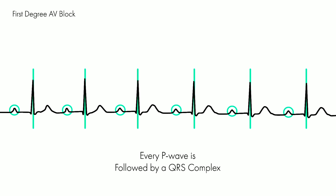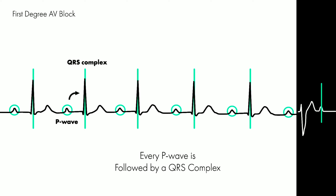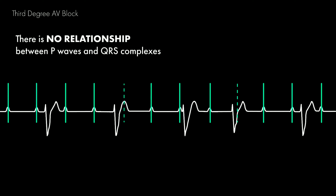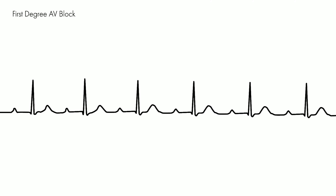In first degree AV block, every P wave is followed by a QRS complex. In third degree AV block, there is no relationship between P waves and QRS complexes.